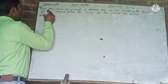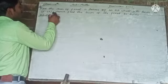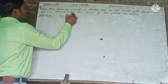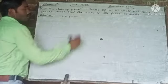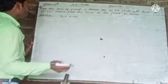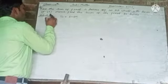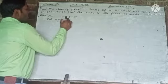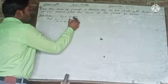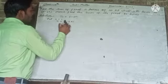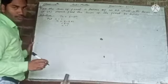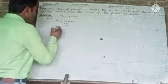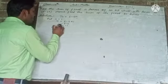Solution. Here, it is given that the nth term t_n is equal to 5 minus 6n. Now, we will put the value of n. Put n equal to 1. So, t1 is equal to 5 minus 6 into 1, which is 5 minus 6, equal to minus 1. So t1 is the first term, therefore a is equal to minus 1.